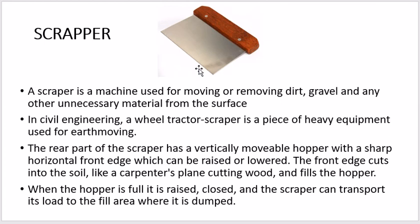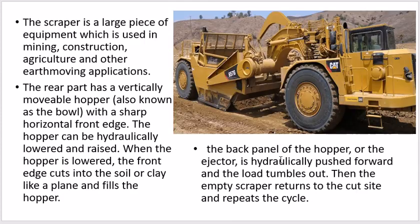The rear part of the scraper has a vertically movable hopper with a sharp horizontal front edge. This front edge is lowered to the ground where gravel, hard materials, or debris are available on the surface. If you want to collect or remove that material, the scraper is the tool to use. The front edge can be raised or lowered — here you can see the blade, which moves up and down.